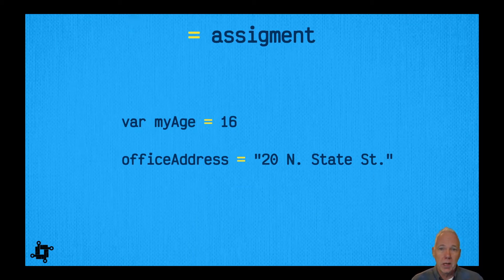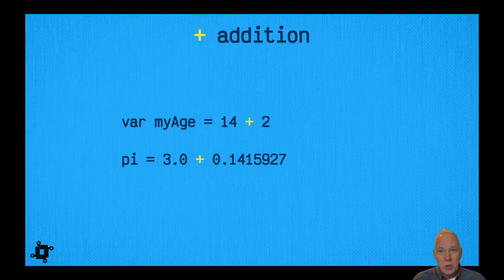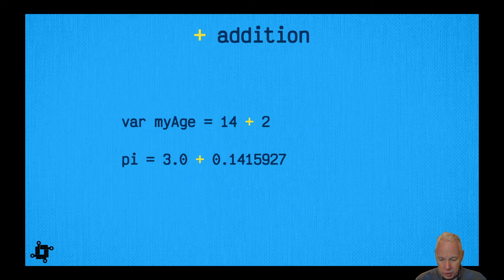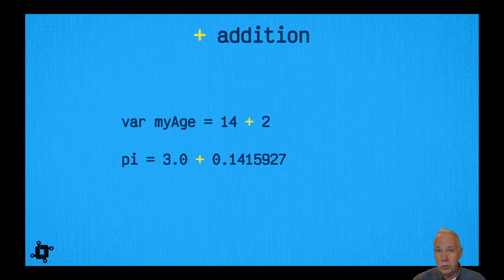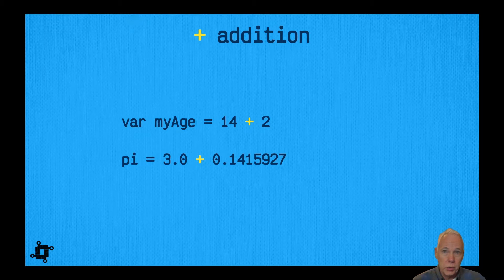Assignment is important because that's where we're going to put the results of various arithmetic operators. If we look at addition, it uses the plus as the operator for addition. Here again we declare myAge, and for example we could do 14 + 2 as an operator for addition, and that would add up to 16. We can also do this for floating point numbers, so here's a variable pi with two floating point numbers that we add together to get the result.